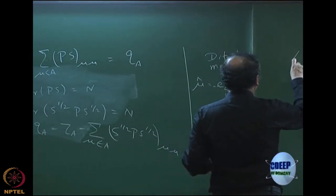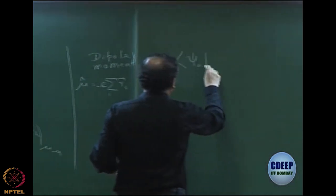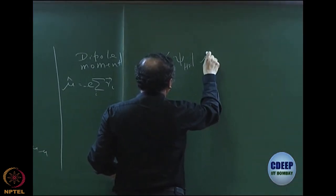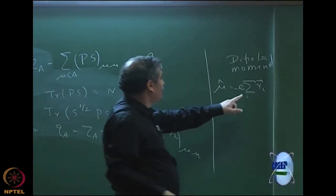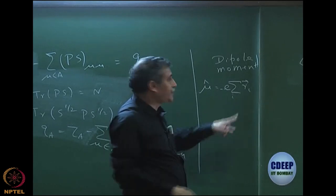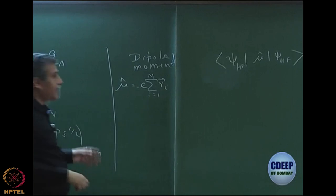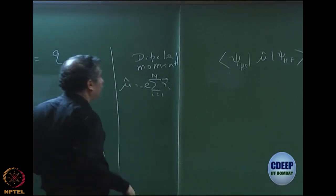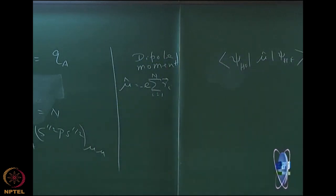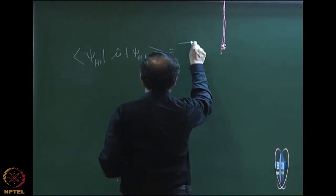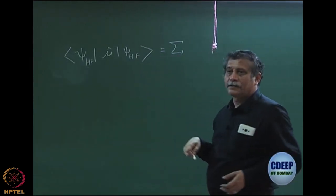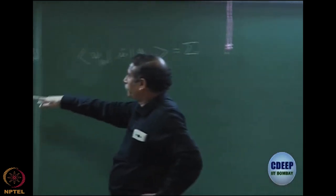What is important is to calculate the expectation value: psi_HF | mu | psi_HF. Let us keep mu as a one-electron operator — mu is nothing but R_i, a sum of one-electron operators over all i from 1 to n. It is a vector, so mu is also a vector operator with components x_i, y_i, z_i. We need to find the average value of these operators using the one-electron operator rule, just as we did for the Hamiltonian.